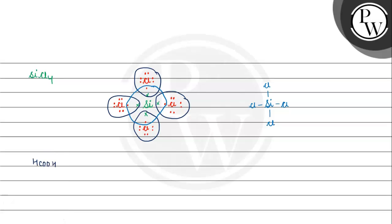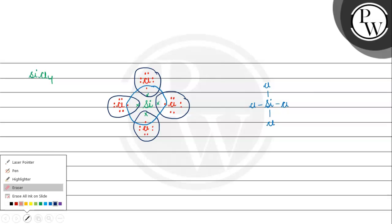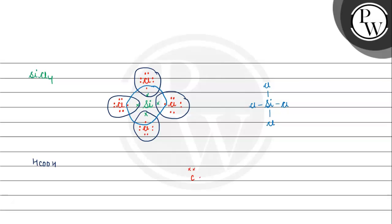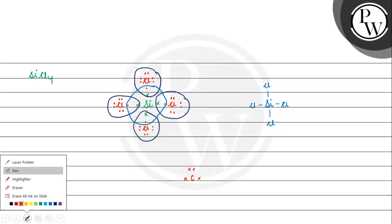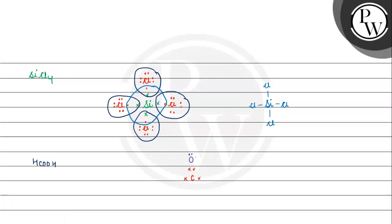Next we have formic acid. Carbon is the central atom with 4 valence electrons. We then add the oxygen atoms — each oxygen has 6 valence electrons. We also add the hydrogen atom with 1 electron. Now, the hydrogen atom gets 2 electrons and this oxygen atom gets 8 electrons.